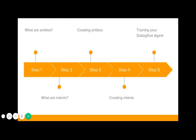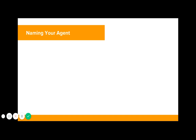Before that, you'll need to know the key components of Dialogflow: what are entities, what are intents, how can we create entities effectively, how do we create intents effectively, and how do you train your Dialogflow agent? By the way, when naming your agent, please do not put any spaces between words. My agent name should not be 'My Agent Name' — it should be one single word.